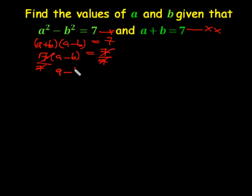So a minus b is equal to 1. We shall call it star 3. We are going to solve star 2 and star 3 simultaneously, so we shall have a plus b equals 7. We add: a plus a, that is 2a.